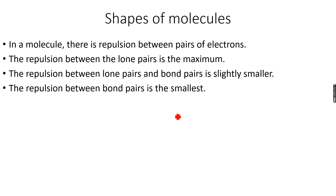Now we are coming to the shapes of molecules, which is a very interesting topic. A molecule has a particular shape because of the repulsion between pairs of electrons. There are two types of pairs of electrons: bonded pairs and lone pairs. Electrons are negatively charged, so you expect repulsion to happen between them, and because of this repulsion we get particular shapes for molecules.